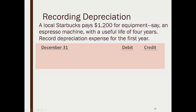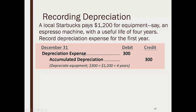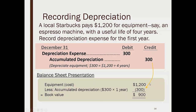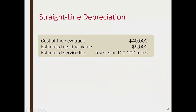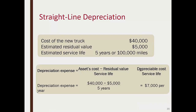For example, a local Starbucks pays $1,200 for a new espresso machine estimated to be useful for four years. Assuming no salvage value, divide $1,200 by 4 years — depreciation expense is $300 per year. The journal entry debits Depreciation Expense $300 and credits Accumulated Depreciation $300. After the first year, cost of equipment less accumulated depreciation gives us the book value.